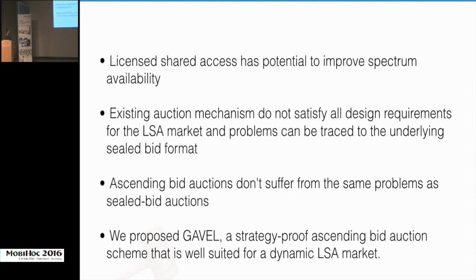To summarize, license shared access has the potential to improve spectrum availability, but existing mechanisms don't satisfy all required design properties, and these shortcomings can be traced to the underlying sealed-bid auction format. Ascending bid auctions avoid these problems by eliminating information bias and the need for critical neighbor identification. Based on these observations, we propose GAVEL, a strategy-proof ascending bid auction mechanism well-suited for dynamic license shared access. Thank you — I'll take questions now.